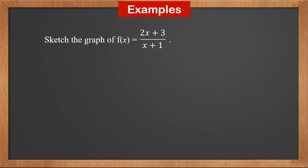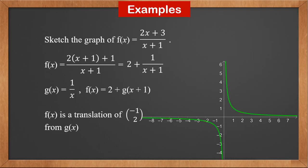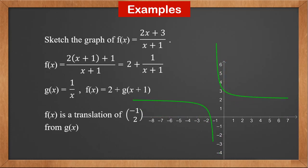Sketch the graph of f(x) = (2x+3)/(x+1). We rewrite the expression as 2(x+1)+1 over (x+1), which simplifies to 2 + 1/(x+1). Let g(x) = 1/x. Then f(x) = 2 + g(x+1), so it is a translation of 1/x by vector (−1, 2). We apply this translation to the graph of 1/x to get the graph of f(x).